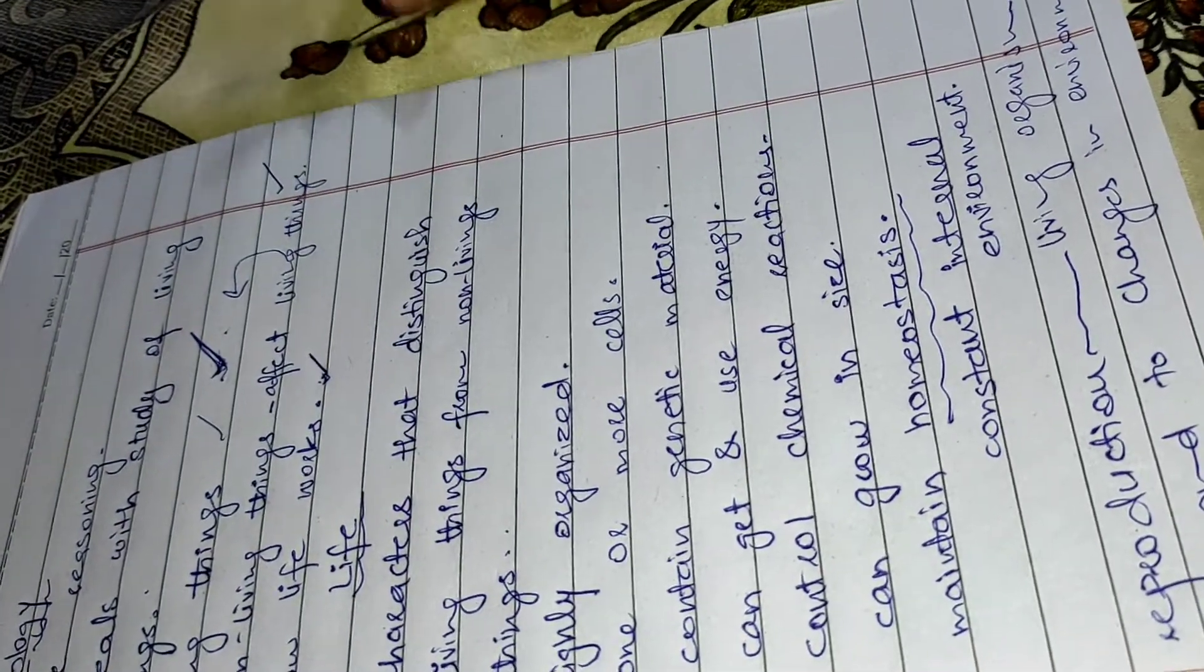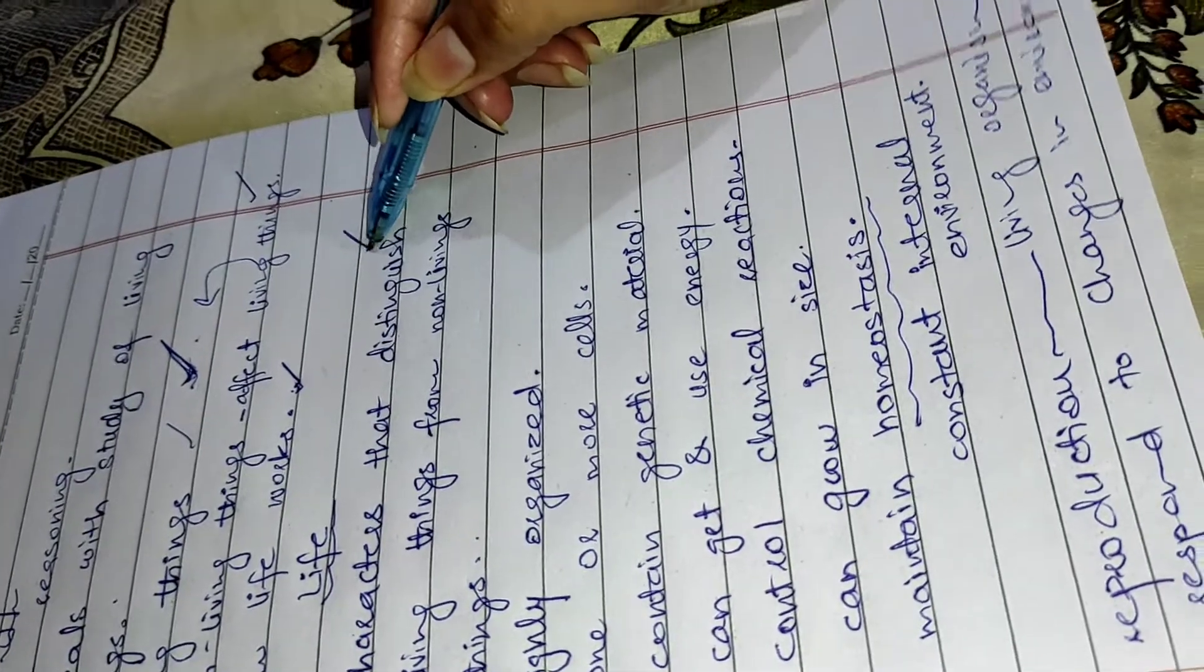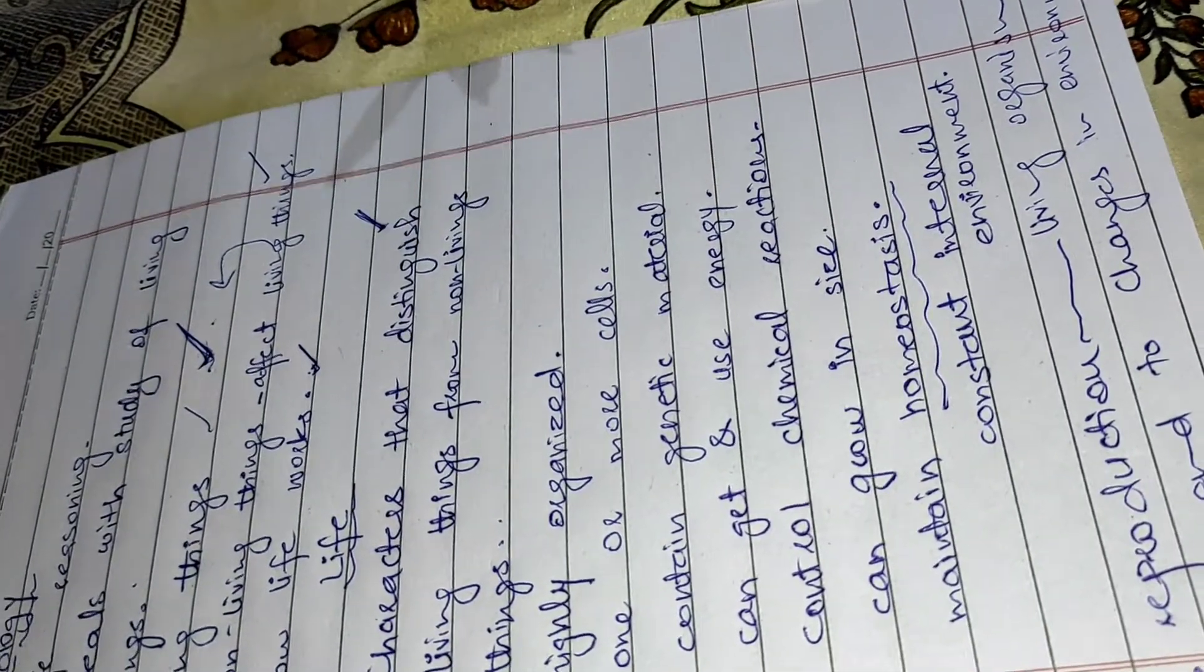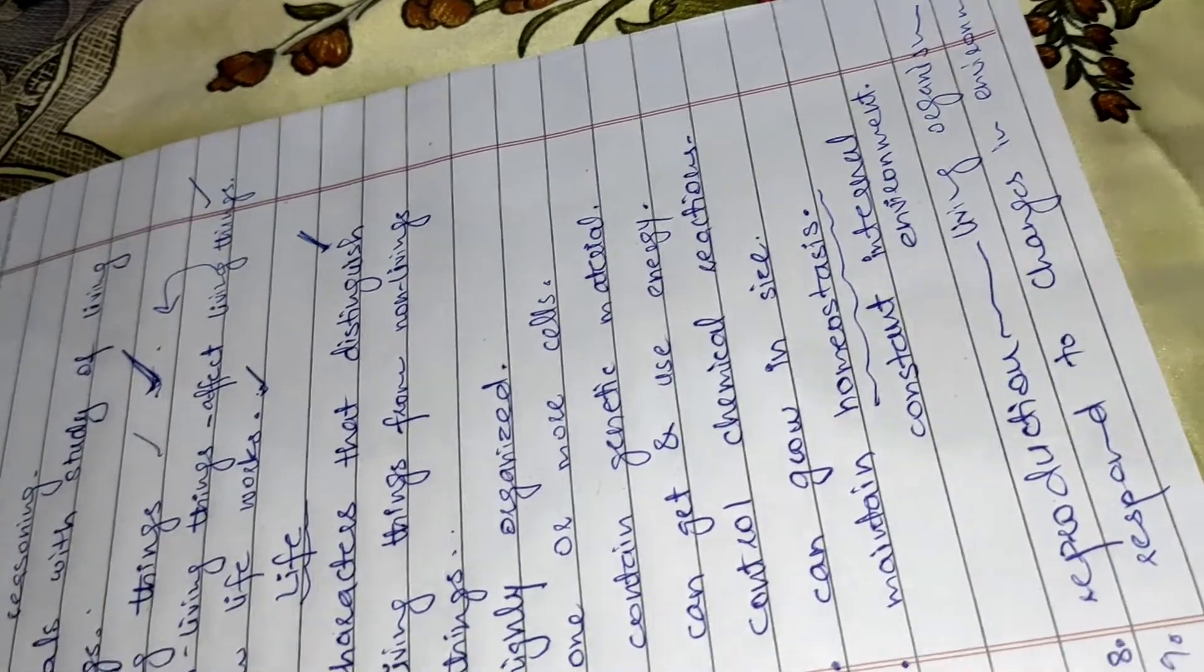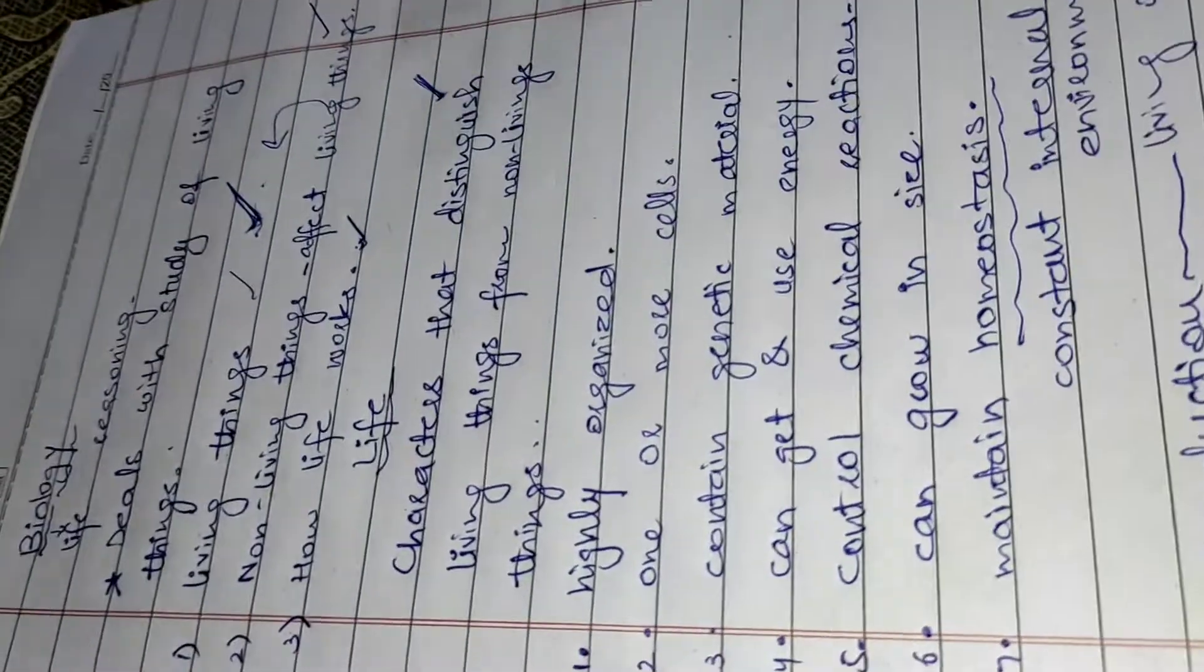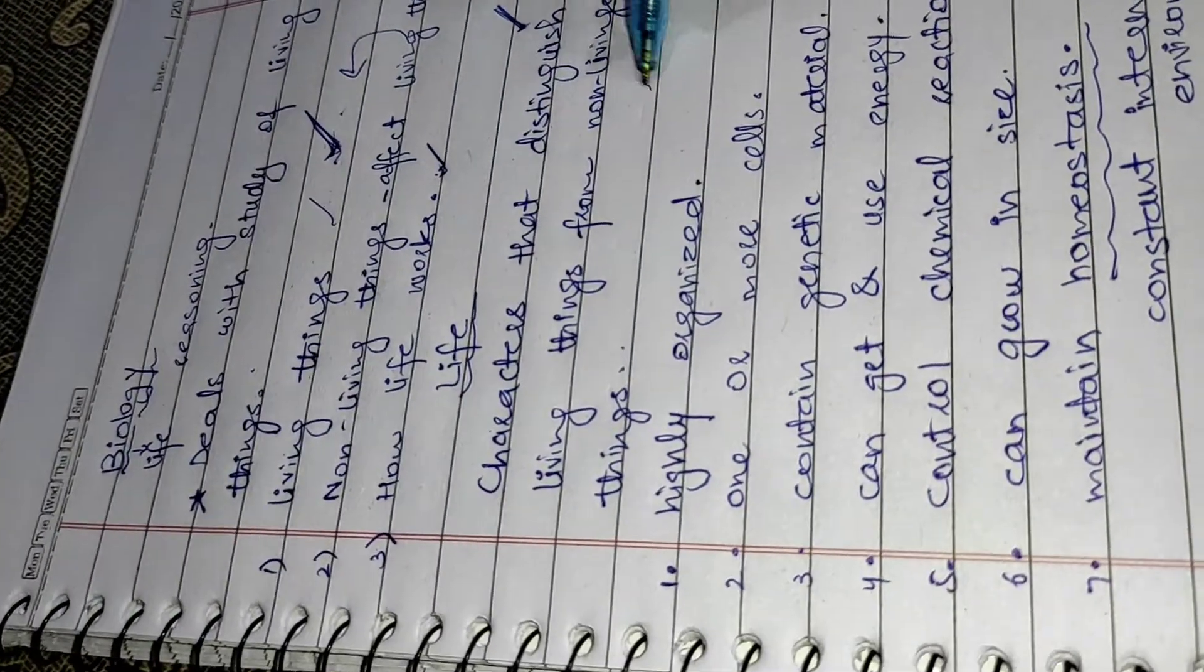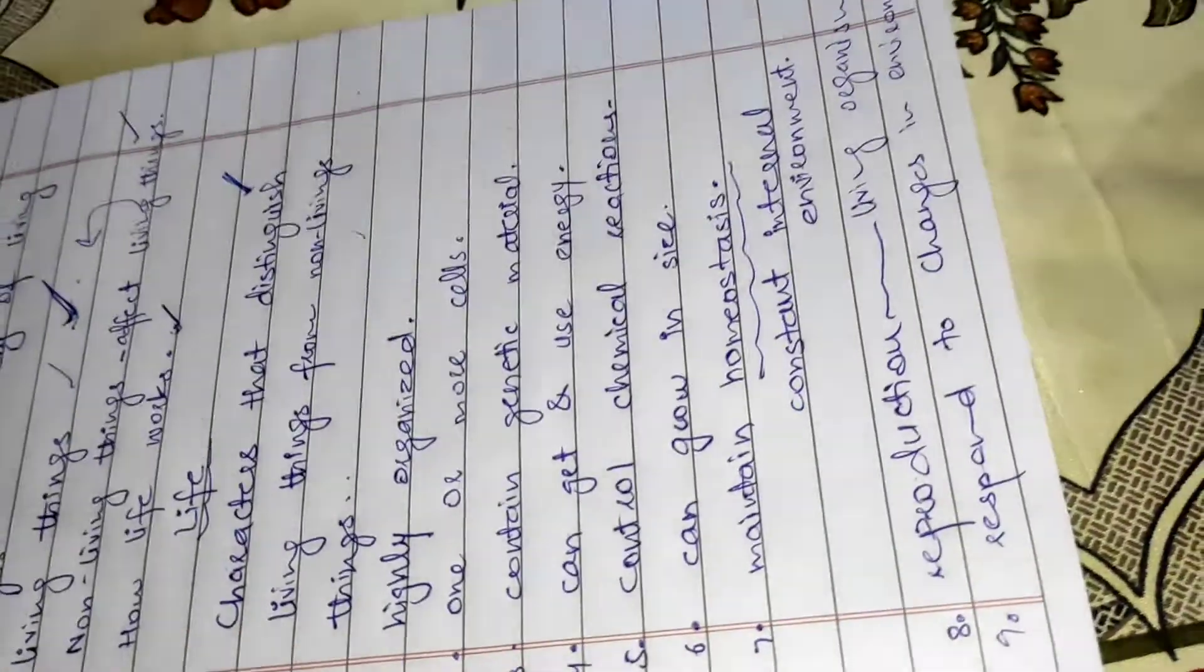We have seen the definition of life, which is a characteristic of living things which is separate from non-living things. They say that it is life. There are some characteristics that we have seen, total nine characteristics that we have studied.